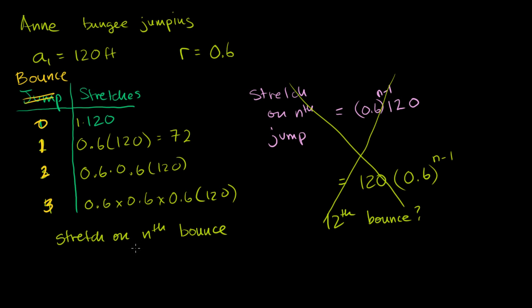And hopefully we'll get order of operations, right? Because exponents take precedence over multiplication. So it'll just take 0.6 to the 12th power only. And so this is equal to 0.26 feet. So this is equal to 0.26 feet. So after your 12th bounce, she's going to be barely moving. She's going to be moving about 3 inches on that 12th bounce.